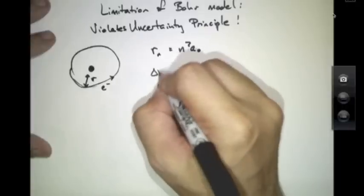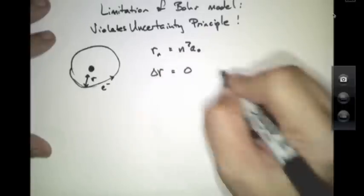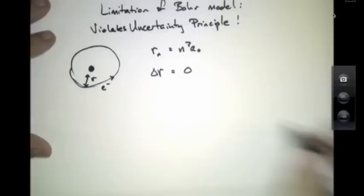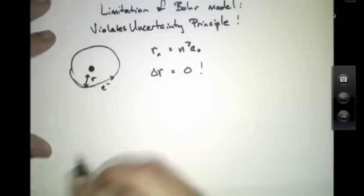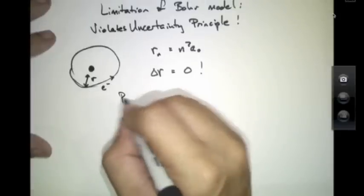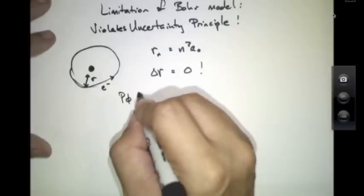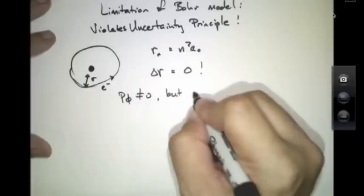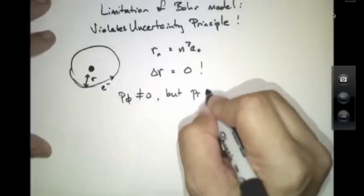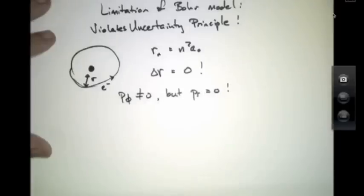As a result, the uncertainty on R is zero. Furthermore, this electron is purely moving in a circular orbit, so while the azimuthal component of the momentum is not zero, the radial component of the momentum is zero.